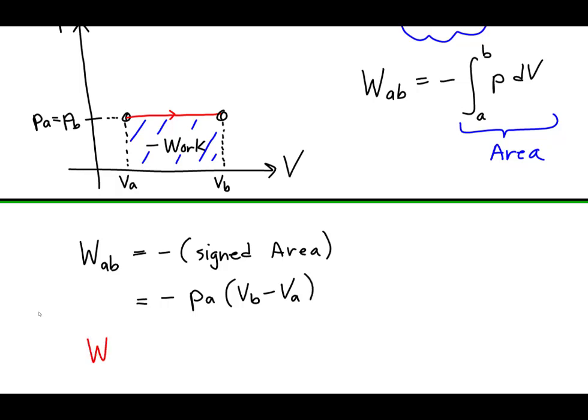This yields our result that the work done isobarically on an ideal gas by its environment is equal to the negative of the product of the gas pressure and its change in volume.